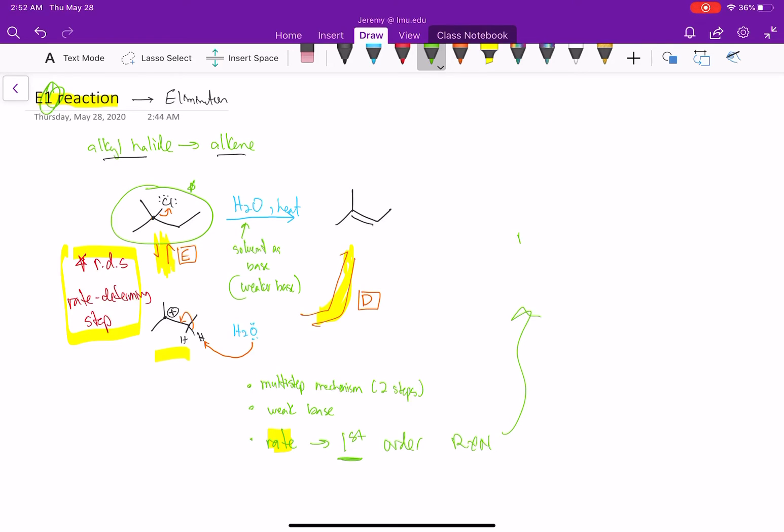So if we write out our rate equation, rate equals our rate constant K times the concentration of the alkyl halide that we have. That is the rate reaction for this reaction. So the rate, the speed of the reaction, is determined by the rate constant and the concentration of our alkyl halide only. The concentration of our base is not relevant.